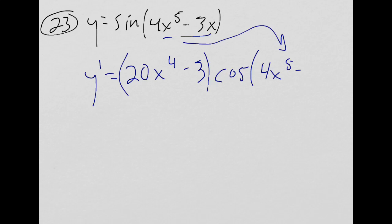4x to the 5th minus 3x, close. And that's all. So I know it looks messy, and we could adjust it if we wanted to, but that would just make it look even more messy. But that's that thing's derivative.